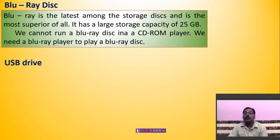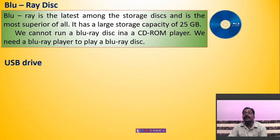You cannot use a Blu-ray disc in a CD-ROM player — you have to install a Blu-ray player in your CPU box to run a Blu-ray disc. On the right-hand side you will see a picture of a Blu-ray disc. The next storage device is a USB drive, also known as a flash drive, pen drive, and thumb drive.